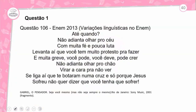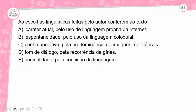Vamos para a primeira questão: Enem de 2013, variação linguística no Enem. Trecho de Gabriel o Pensador: 'Até quando não adianta olhar para o céu com muita fé ou pouca luta? Levanta aí que você tem muito protesto para fazer. Muita greve. Você pode, você deve, pode crer. Não adianta olhar para o chão, virar a cabeça para não ver. Se liga aí que te botaram numa cruz e só porque Jesus sofreu não quer dizer que você tenha que sofrer.' As escolhas linguísticas feitas pelo autor conferem ao texto: A) caráter atual pelo uso de linguagem própria da internet; B) espontaneidade pelo uso da linguagem coloquial; C) cunho ativista pela predominância de imagem metafórica; D) tom de diálogo pela recorrência de gírias; E) originalidade pela concisão da linguagem.